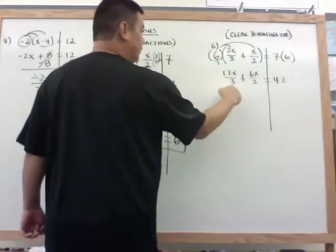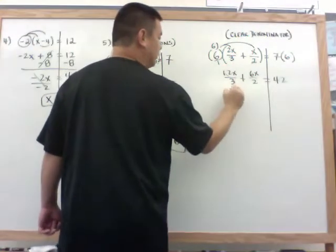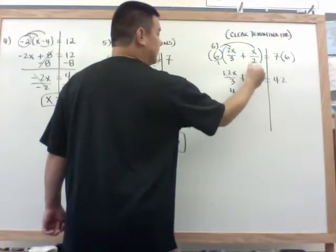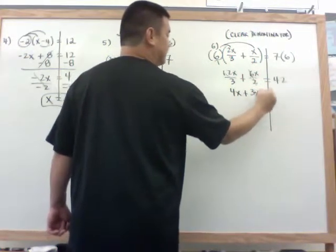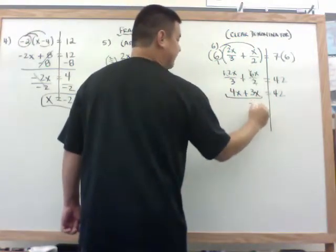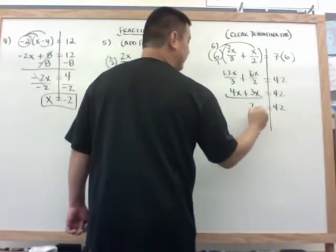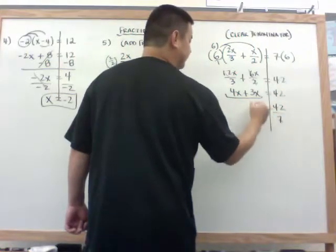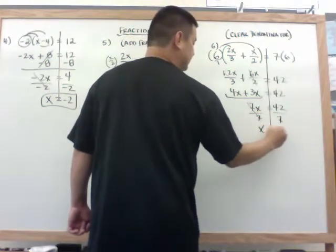When I change this 12 over 3, 12 divided by 3 just becomes 4x, plus 6 divided by 2 just becomes 3x is equal to 42. When I combine my like terms here, I get 7x is equal to 42, divide by 7, and x is equal to 6.